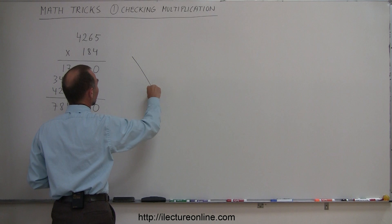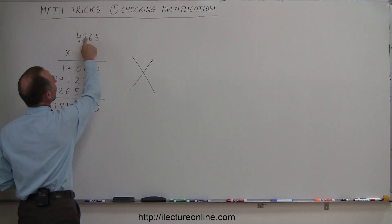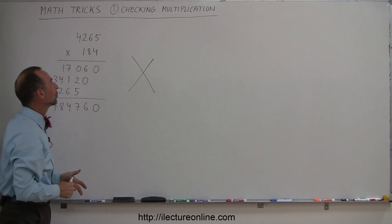First you draw a little cross right here and that leaves you with four spaces. In the top space you're going to sum up the numbers that are at the top of your multiplication.